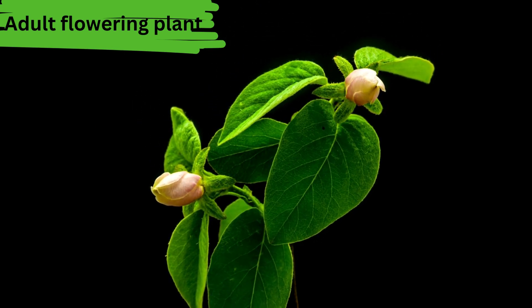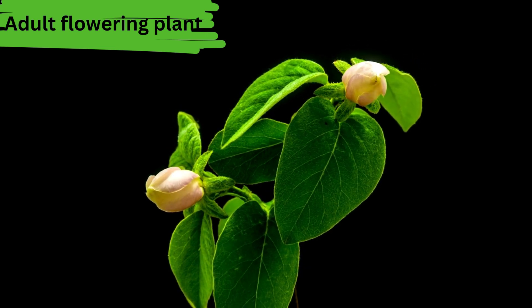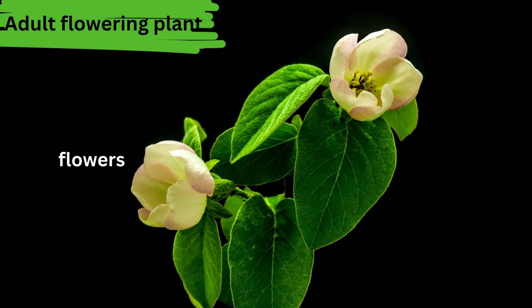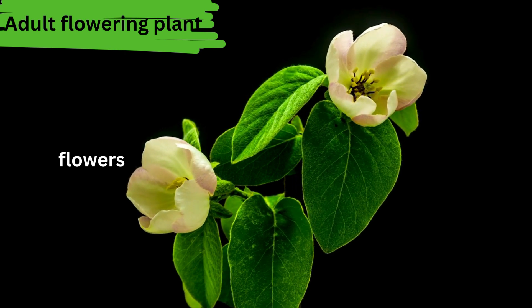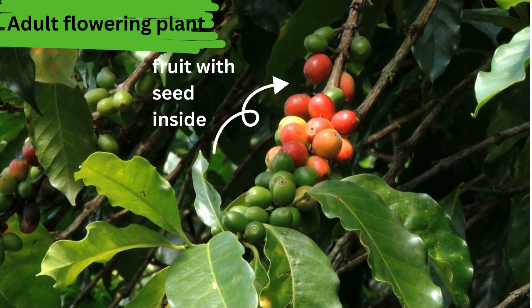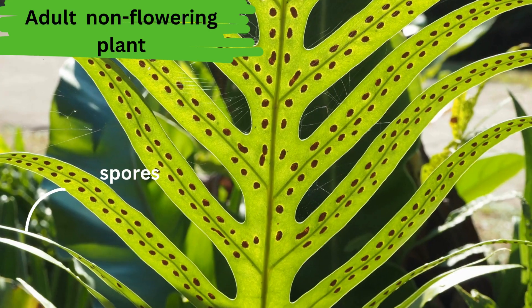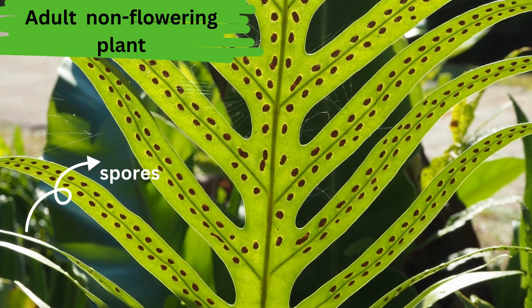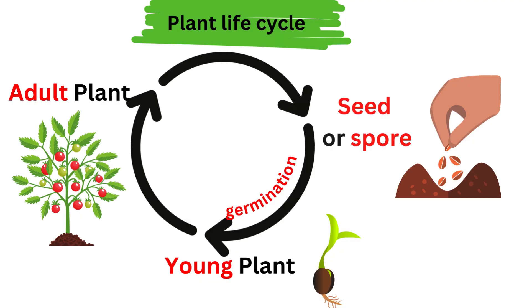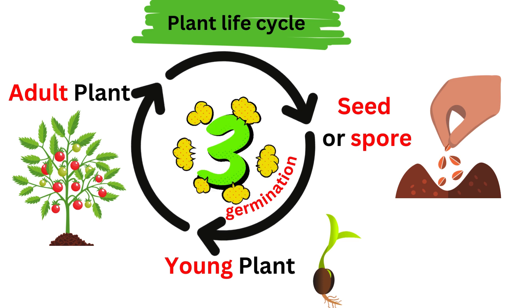A living thing can be considered an adult when it has the ability to reproduce. The young plant grows and becomes an adult when it's able to reproduce. This can be with flowers, which develop fruits and seeds, or through spores. Seed, young plant, adult plant.